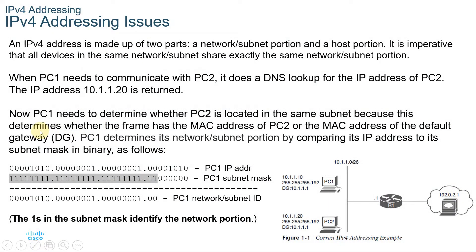A common troubleshooting issue: referring to this diagram, PC1 has an IP address of 10.1.1.10 with a subnet mask of 255.255.255.192, which means this is slash 26. PC2 has an IP address of 10.1.1.20 with the same subnet mask of 255.255.255.192, still slash 26. These two computers belong to the same network: 10.1.1.0/26. Their default gateway is the same, which is the router's interface.